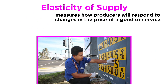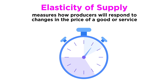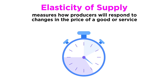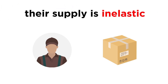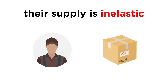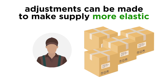Elasticity of supply measures how producers will respond to changes in the price of a good or service. The key factor influencing elasticity of supply is time. In the short run, some producers can't easily change their output levels, and therefore their supply is inelastic, whereas in the long run, adjustments can be made to make supply more elastic.